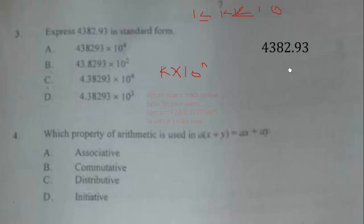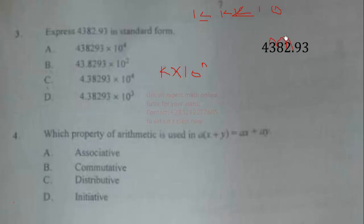The number we need to write in standard form is 4382.93. We move the decimal point backwards until the number falls within the interval [1, 10). 4.3 is within that interval, so we move back 3 places. Movement backward is positive, so n = 3, and k = 4.38293. The correct answer is option D.